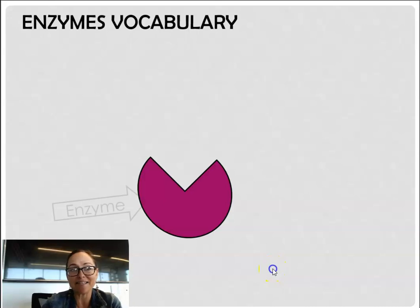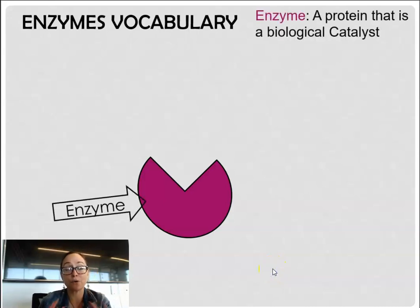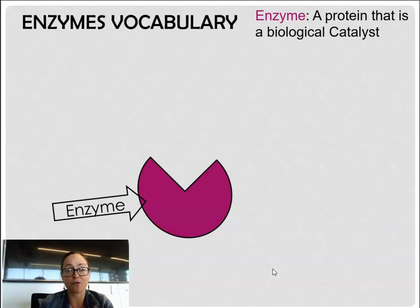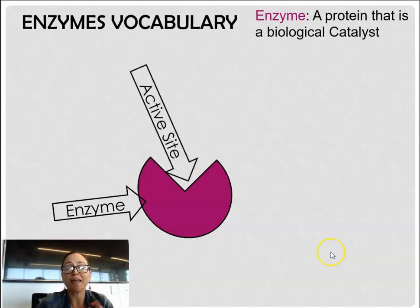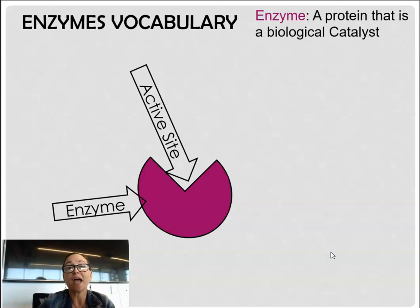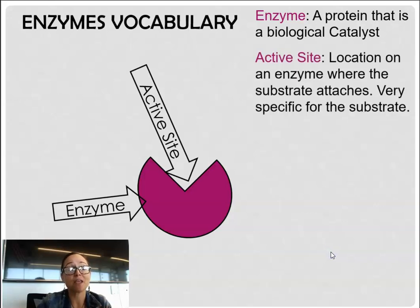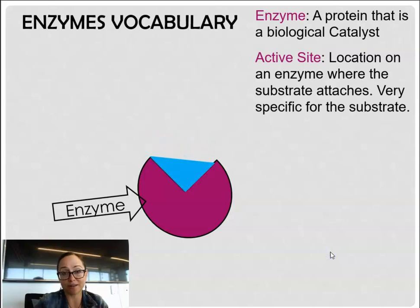Here we have an enzyme, and enzymes are proteins. When you look at the four macromolecules — carbs, lipids, proteins, and nucleic acids — enzymes fall under the protein category. Within this enzyme, there's a very specific shape, and shape determines function. If you change the shape of the enzyme, you run the risk of changing its function. The very specific shape that matters in enzymes is called an active site, and the active site is where the reaction is going to occur — it's where our substrate is going to attach.